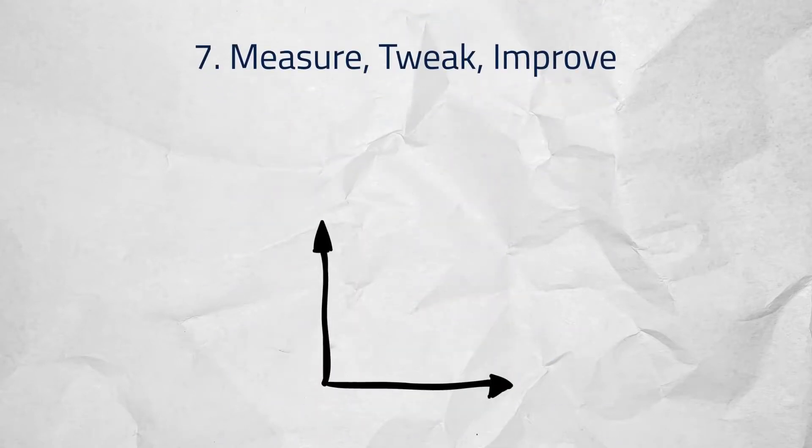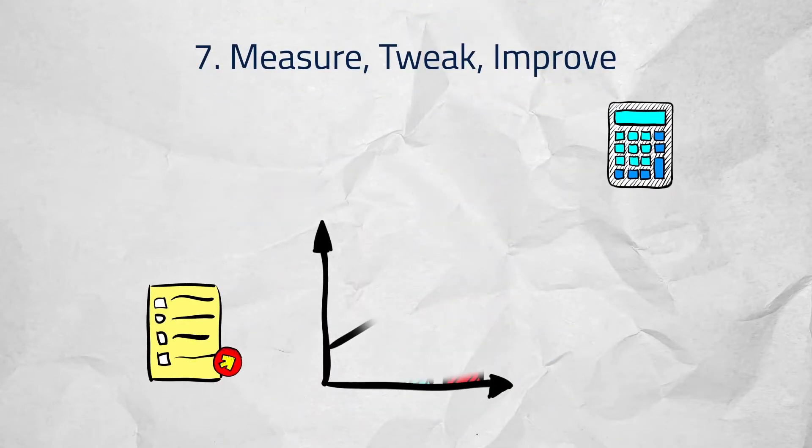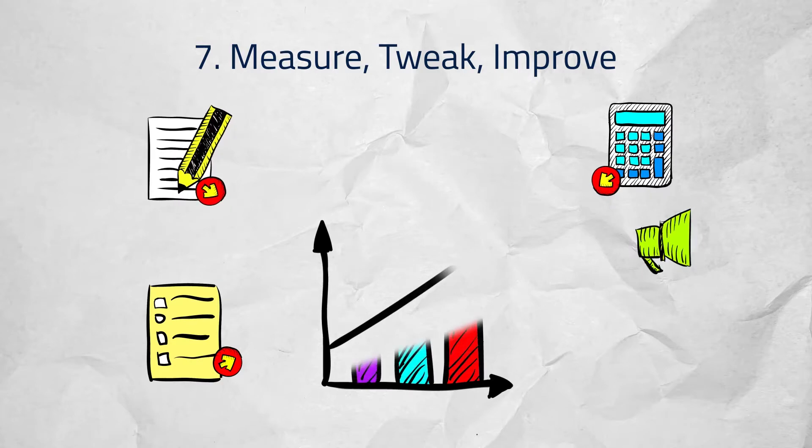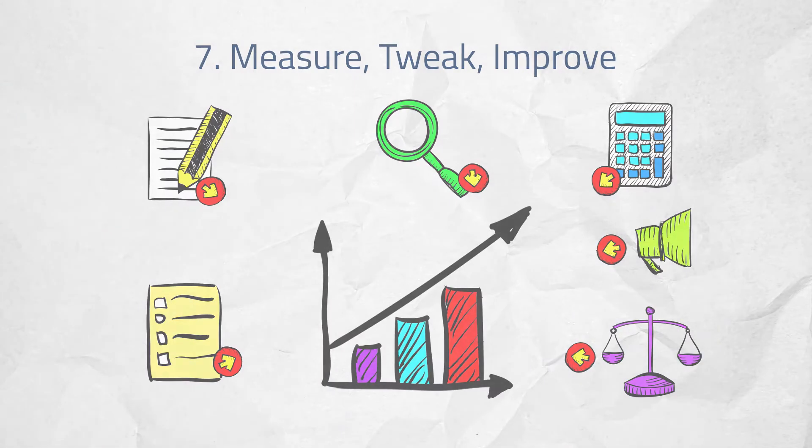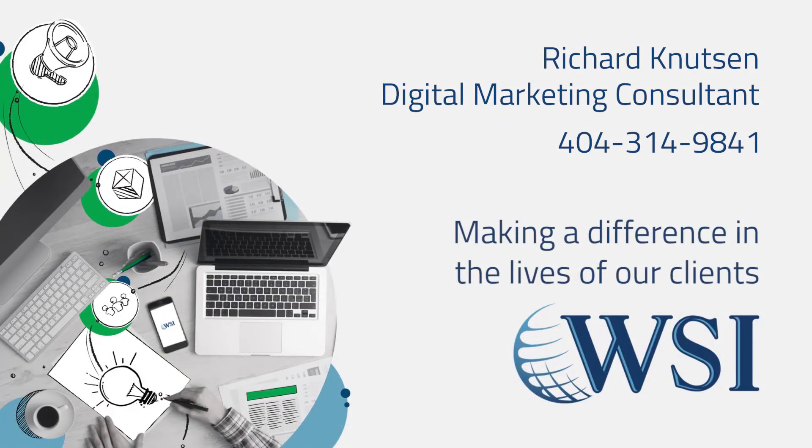Seven: Measure, tweak, improve. Just as keyword research is a critical place to start, consistently measuring your success is crucial to your continued improvement, ultimately enabling you to achieve a return on your digital advertising investment. If you would like help improving your pay-per-click advertising, get in touch.